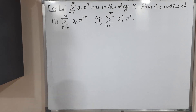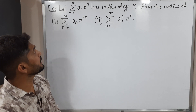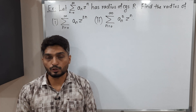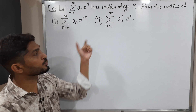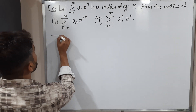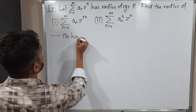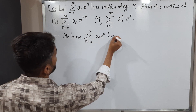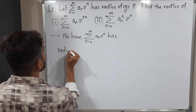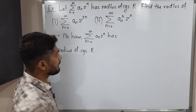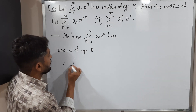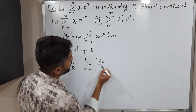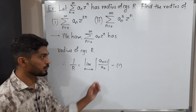Hi everyone. In this video, we are going to discuss this example. We have a power series summation n, a_n z^n. It is mentioned that it has radius of convergence r, and with the help of this information, we have to find the radius of convergence of two power series. By the formula of radius of convergence, we can write 1/r = lim_{n→∞} |a_{n+1}/a_n|. This is important information, so I'm calling it equation (1).